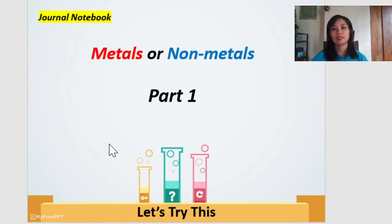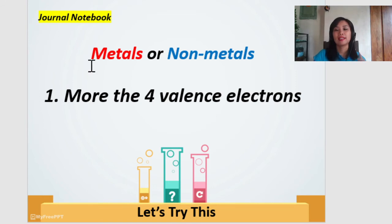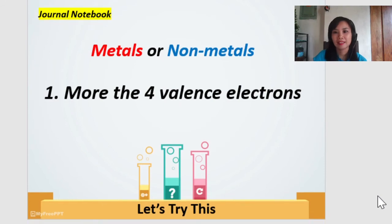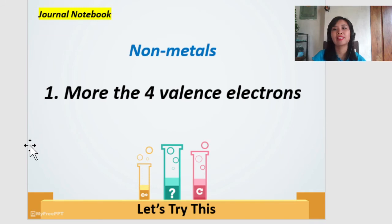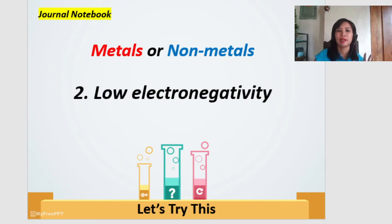So, how about in our, let's try this. I want you to get your journal notebook and try to answer these metals or non-metals. Again, five seconds only. Okay, start. Is it metal or non-metals? Write only metal or non-metal. More than four valence. Okay, how about, hopefully you were able to get that? Review, review first. Yeah, for number.